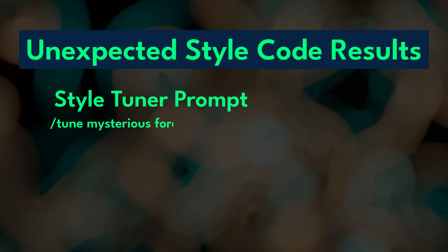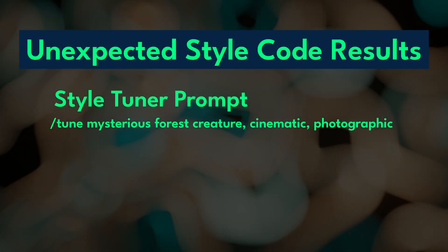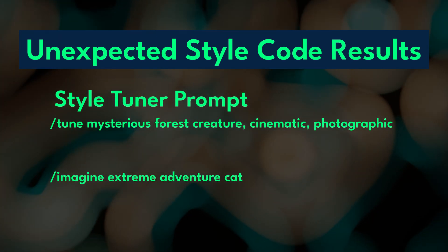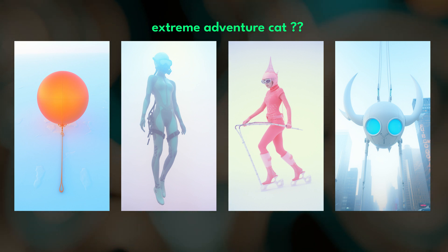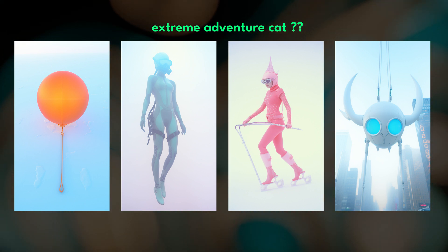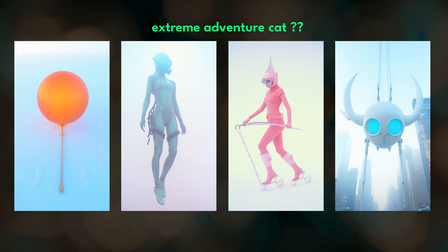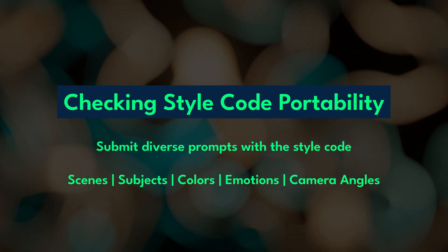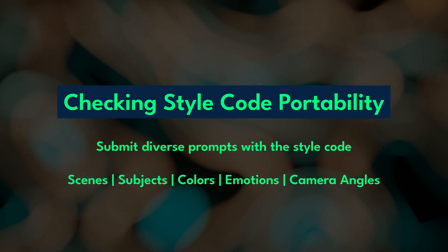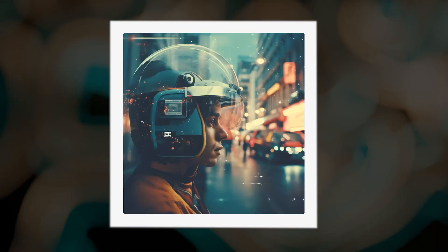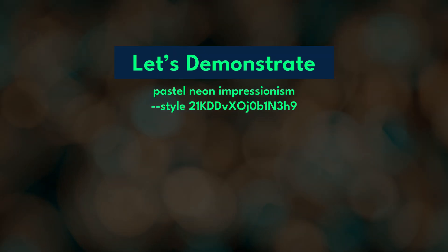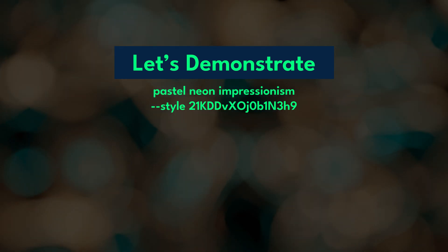For example, I made a style code using a tuner prompt of mysterious forest creatures cinematic photographic, then I prompted for Extreme Adventure Cat and got some very unexpected results. You can see how just adding that style code gave me something completely different from what I prompted for. To see how portable a style code is, you want to submit diverse prompts with your style code. And just a warning — if you have interest-based hyper focus tendencies like I do, it's likely that you will spend hours doing this if you stumble into a really interesting style code. To demonstrate the effect of our pastel neon impressionism style code, I'm going to submit three sets of prompts and then compare the results.